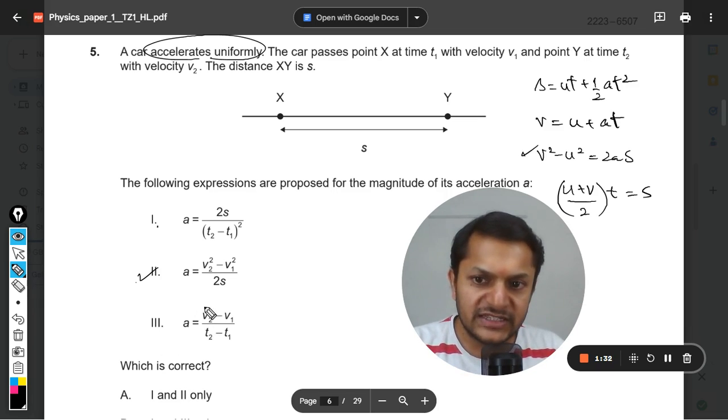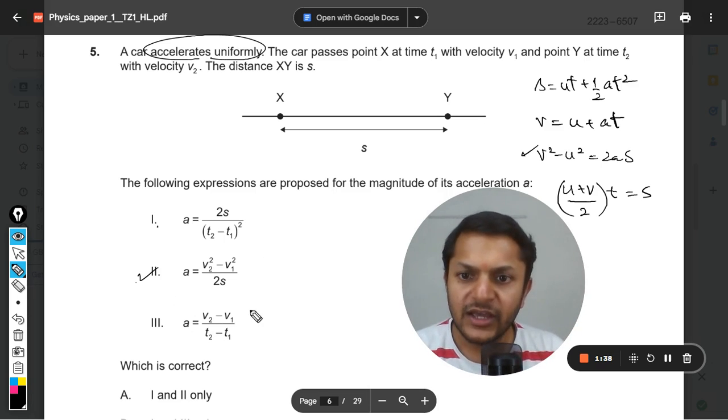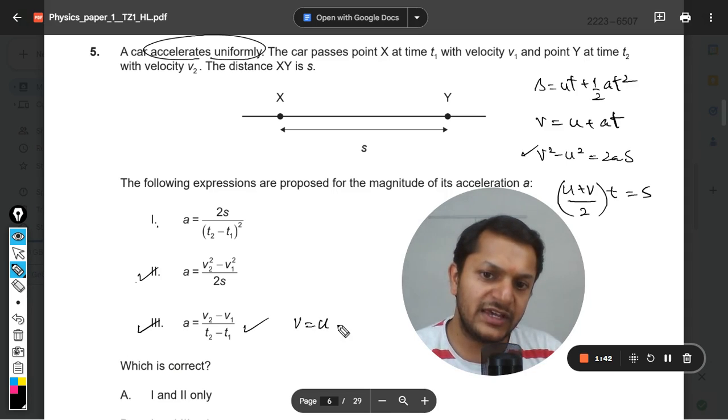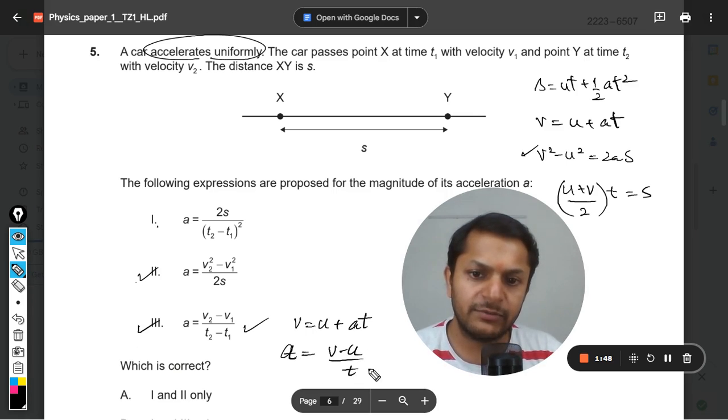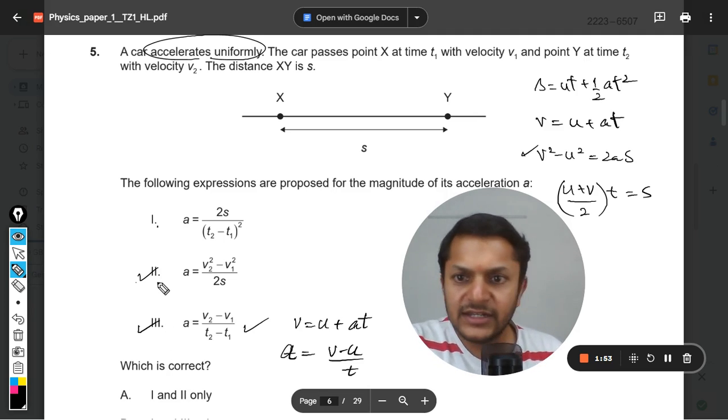One I will be coming to that point. Let us go for 3. So this is the final v minus u, and t2 minus t1 is the total duration for which it is moving. So even this is correct. So 3 is also correct. You are using v equals u plus at, so a equals v minus u divided by t. So it means 3 is also correct, 2 is also correct.